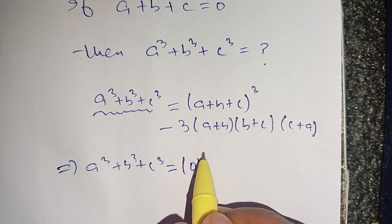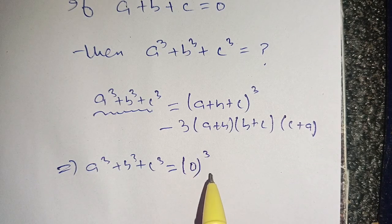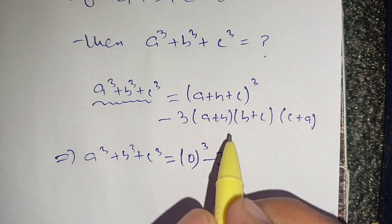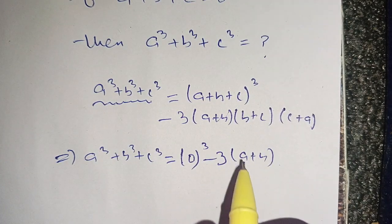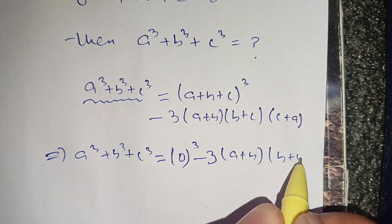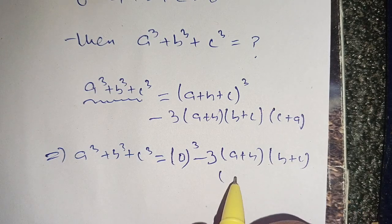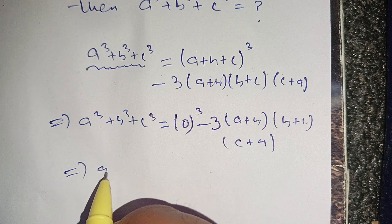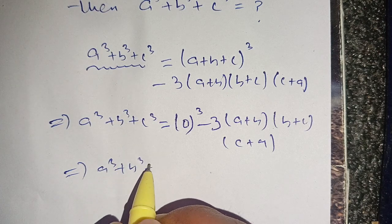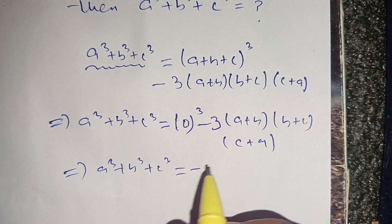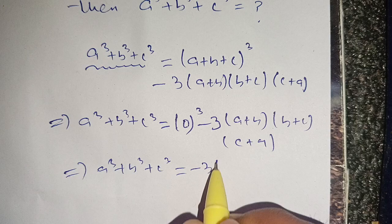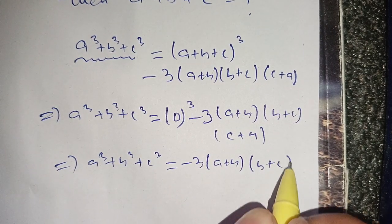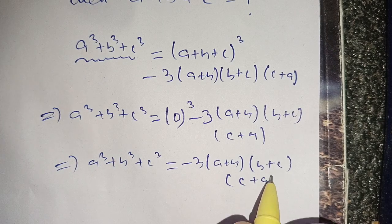Substituting, it becomes 0 cube minus 3 times a plus b, times b plus c, times c plus a. This gives us a cube plus b cube plus c cube is equal to minus 3 times a plus b, times b plus c, times c plus a.